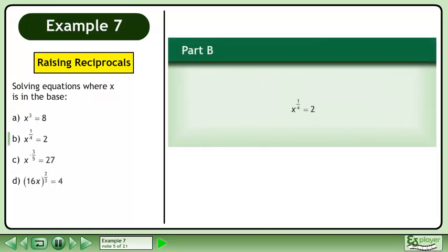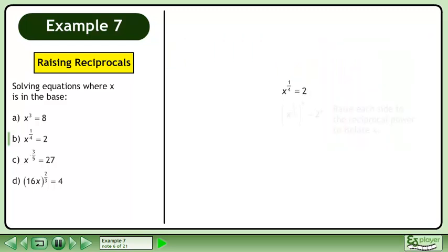In part B, solve x to the power of 1 over 4 equals 2. Raise each side to the reciprocal power to isolate x. The answer is x equals 16.